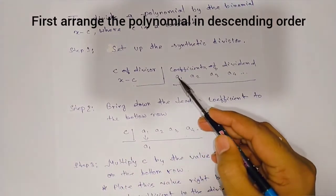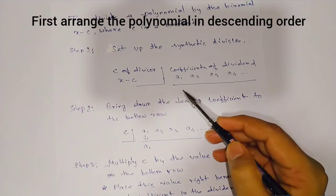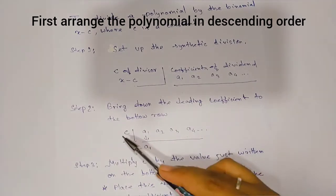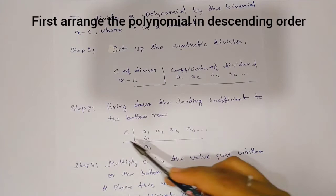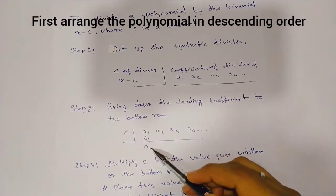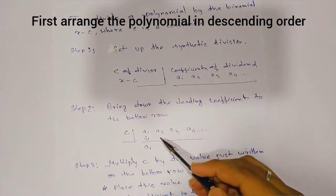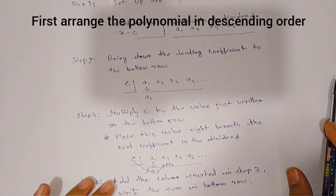This coefficient a1 goes here. Second step: multiply C by a1. Whatever result you get, substitute it here. Third step: multiply C by the value just written.